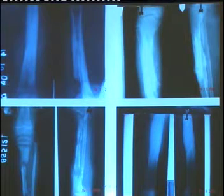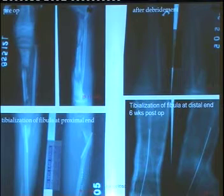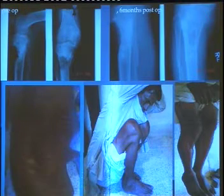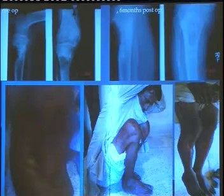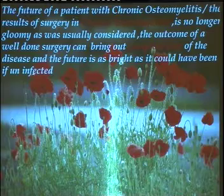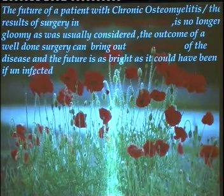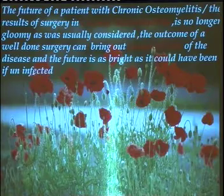Some radiographs: a patient with chronic osteomyelitis — you can see the sequestrum. The whole of the diaphysis got sequestrated. Another patient — the whole of the tibia got sequestrated and this was managed by fibrillization, the tibialization of fibula. Another patient with chronic osteomyelitis was managed by saucerization and primary skin flap using gastrocnemius. The results of surgery in chronic osteomyelitis are no longer gloomy as was usually considered. The outcome of a well-done surgery can bring about complete cure of the disease, and the future is as bright as it could have been if uninfected.